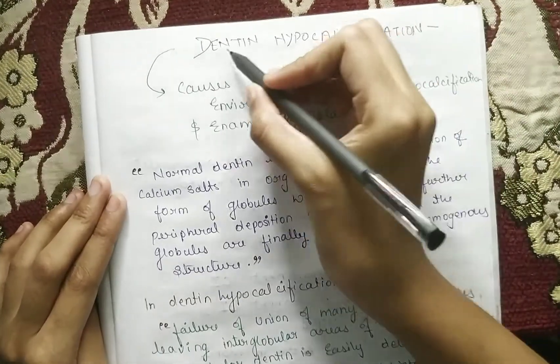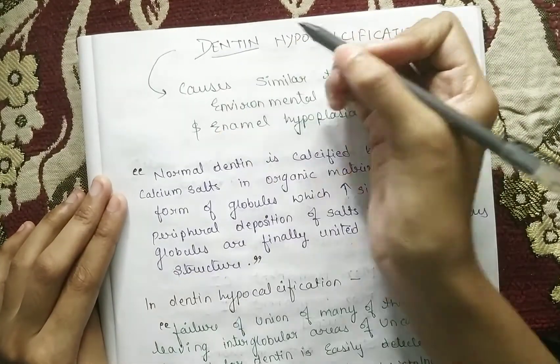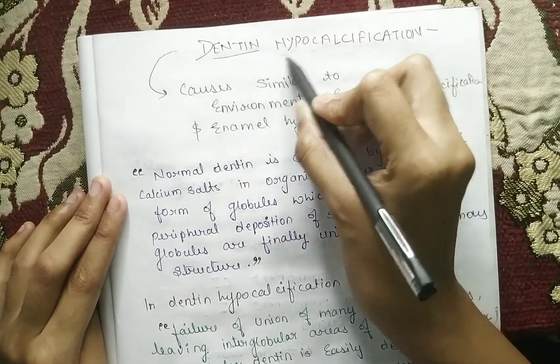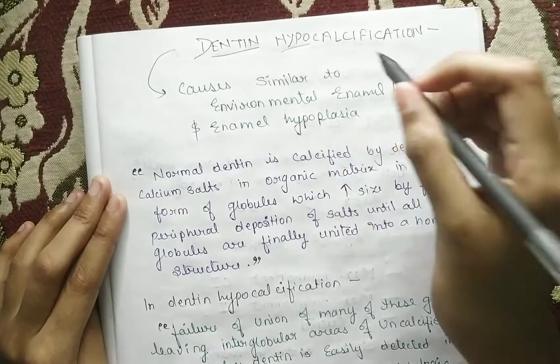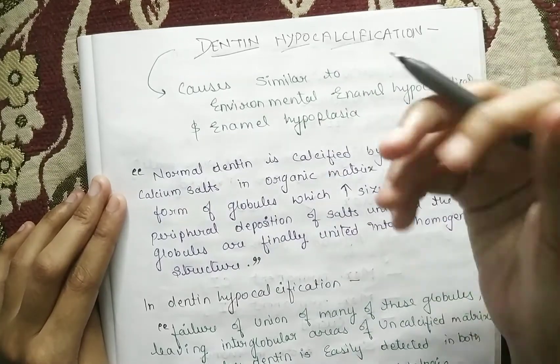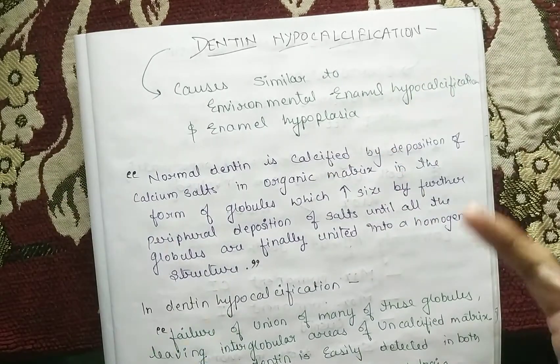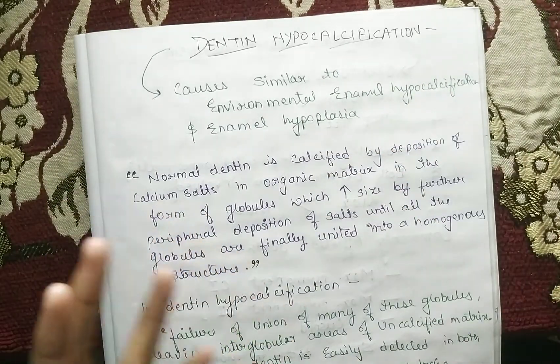First of all, let's take a look at these words. Dentine has some effect; 'hypo' means less, and 'calcification' means calcium, so calcification is not able to occur normally.